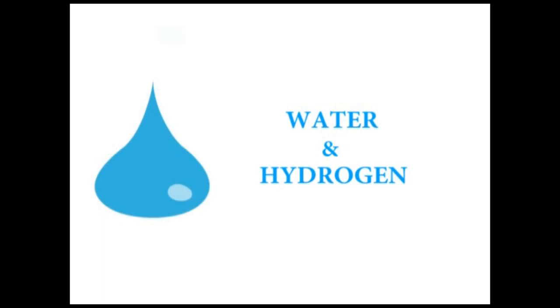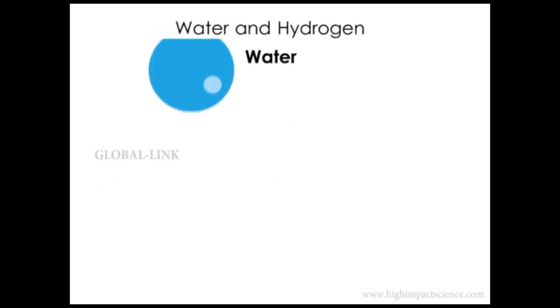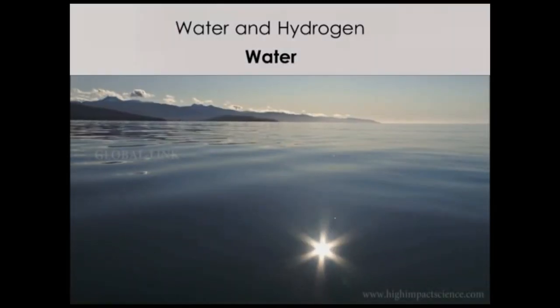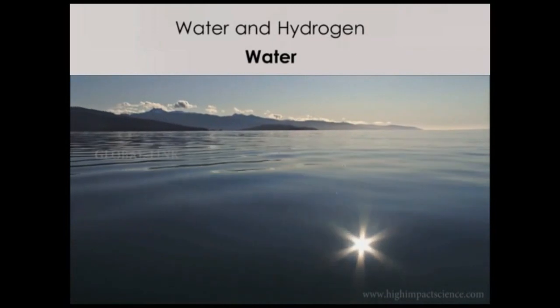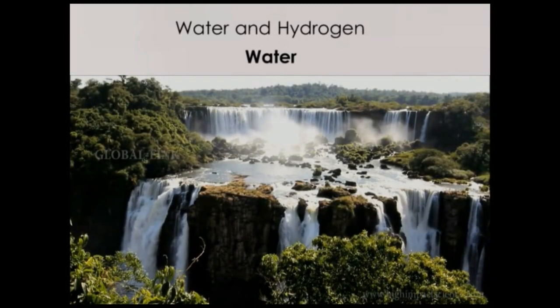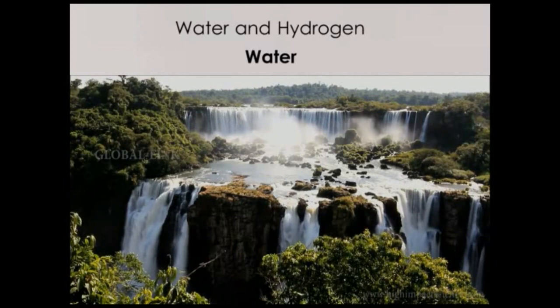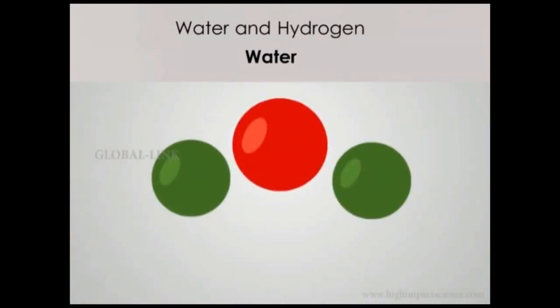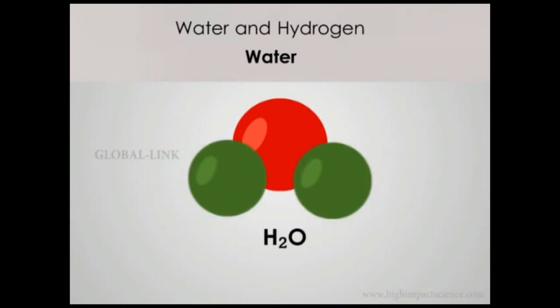This chapter covers water and hydrogen. Water is the most abundant substance on Earth, with about 71 percent of the planet covered in water. It's found in water bodies such as seas, oceans, lakes, rivers, and underground sources. It's also a major component of living cells in organisms. Water is a compound of two hydrogen atoms and one oxygen atom, and it's a product of a vast majority of reactions.